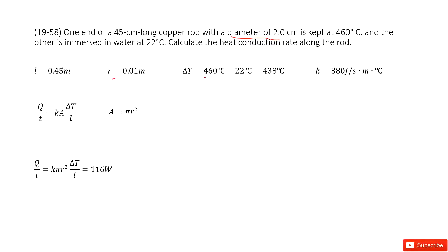The temperature changes from 460 degrees Celsius to 22 degrees Celsius. So ΔT = 460°C - 22°C = 438°C, and the constant k = 380 J/s·m·°C is there.